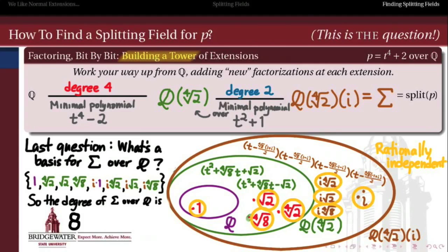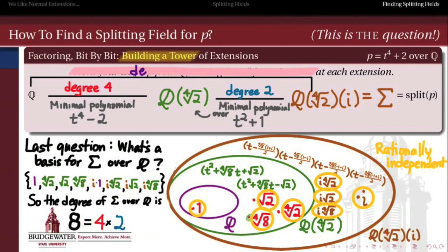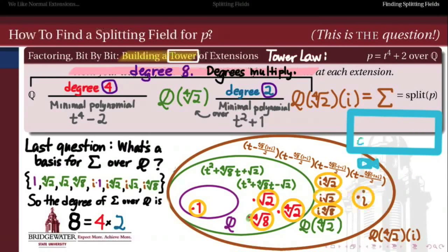Is there a way we could have known that degree without explicitly writing out the basis? Of course — it's four times two, and four and two were the degrees of each step of our extensions in what we call a tower: an extension of an extension. Because we extended first by something of degree four and then by something of degree two, we're guaranteed to get a total extension of degree eight. That's an instance of the tower law, which says that degrees of finite extensions are multiplicative in a tower — the degree of the total extension is the product of the degrees of each step. That's the process of computing a splitting field. Where we want to go next is to understand more about the structure of that splitting field, which leads us into a discussion of automorphisms of fields.